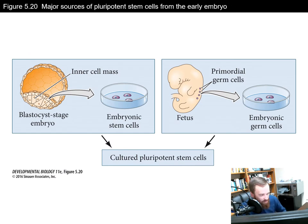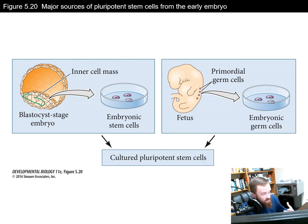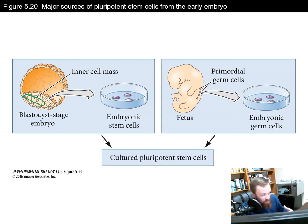When we talk about culturing stem cells, there are two major sources of pluripotent stem cells from an early embryo. One is embryonic stem cells that arise from culturing the inner cell mass — the ICM — that is indicated on this blastocyst, and these are cells that are not yet differentiated. You can also culture embryonic germ cells, or EG cells — gonad cells that are not differentiated yet and are still pluripotent, having not yet migrated to the gonads.